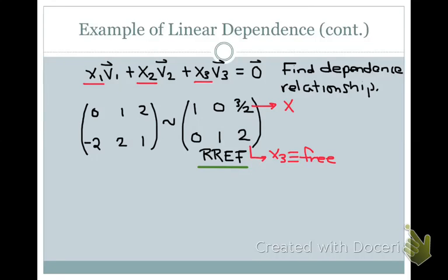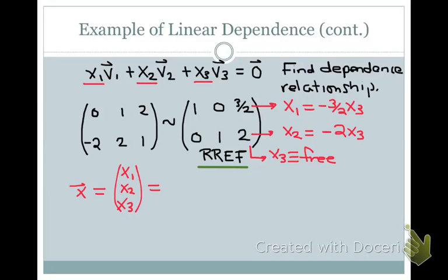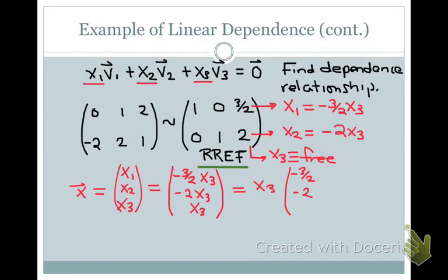We can write the other variables in terms of x3. From the first row, x1 equals minus 3/2 times x3. From the second row, x2 equals minus 2 times x3. Our solution vector x has elements x1, x2, and x3. Replacing x1 and x2 with their expressions in terms of x3, and factoring out x3, we get x3 times the vector (−3/2, −2, 1).